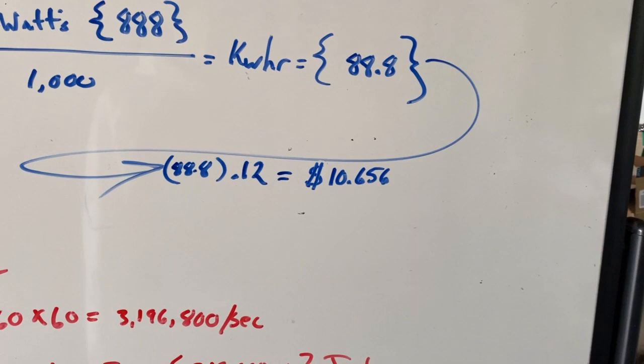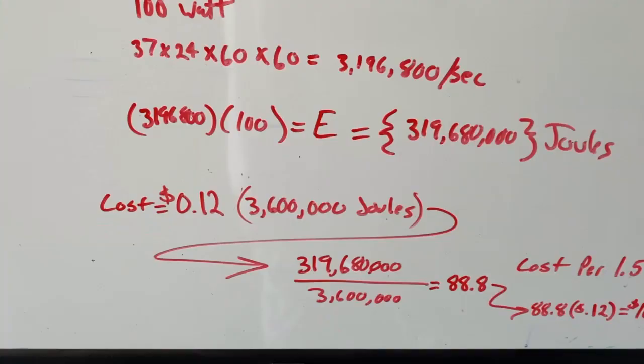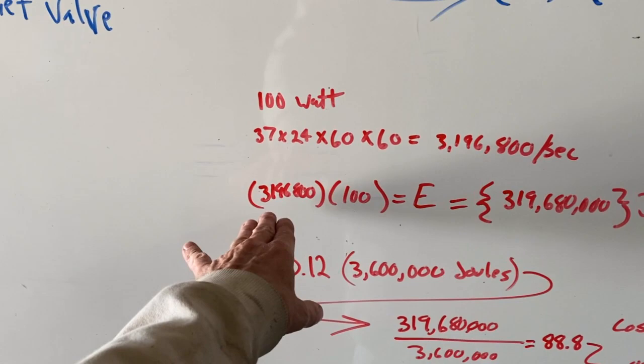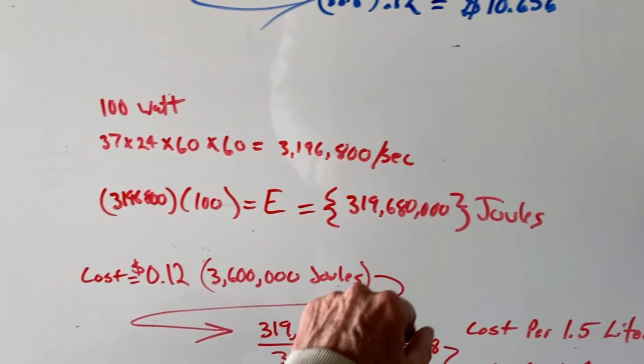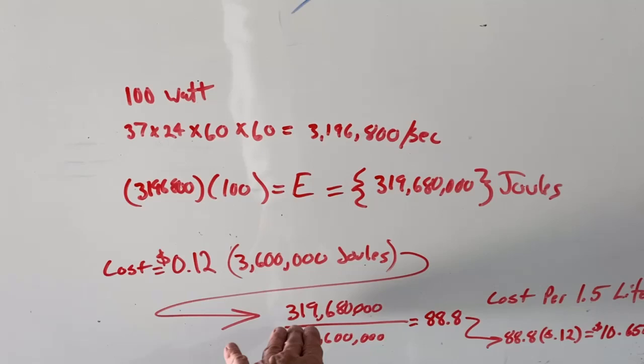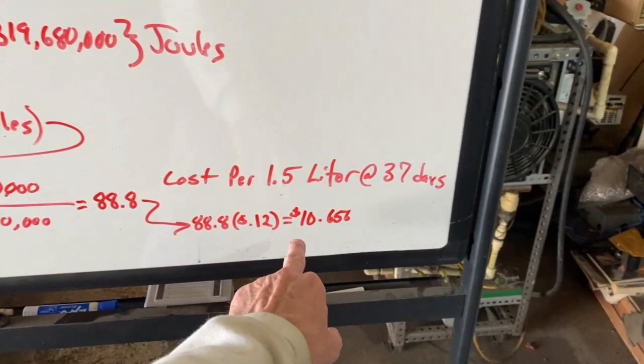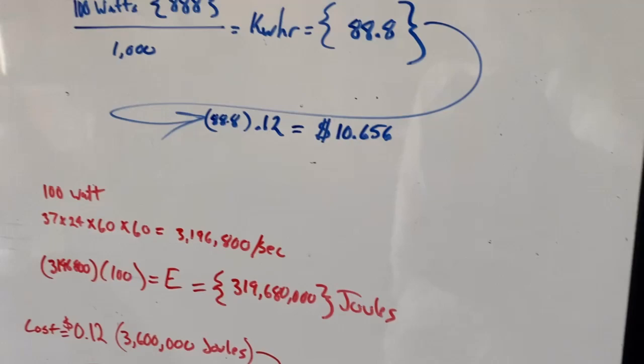All right, so let's check the math here by doing this another way. If we do this by using joules, we convert to seconds. We have 3 million seconds times 100 watts gives us 319 million joules. It's 12 cents for every 3.6 million joules. So that 319 million joules divided by the 3.6 million joules gives us a number of 88, sound familiar? 88.8 kilowatts times 12 cents equals $10.56 for that 1.5 liter solution of 16 percent nitric acid. A 70 percent solution at one liter is $80, so we're still looking good here.